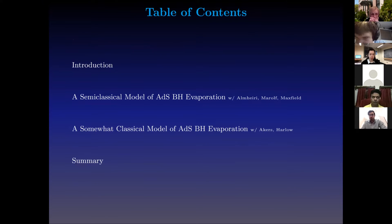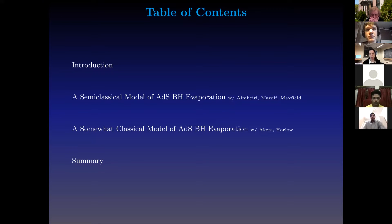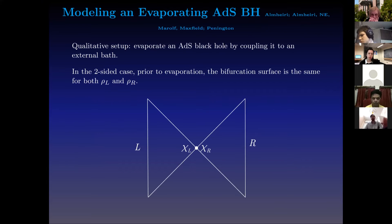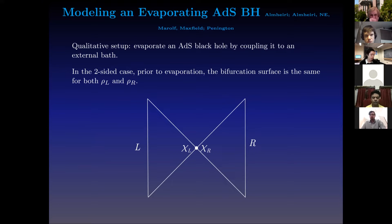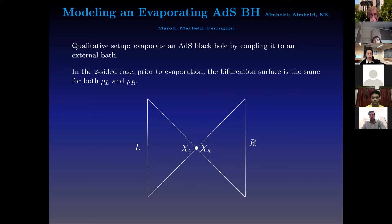I'm going to move on to the semi-classical model of ADS black hole evaporation. Because this has been discussed at almost ad infinitum at previous conferences, I'll be a little light on the technical details and talk more about the details of the second model later. The qualitative setup is that we want to evaporate an ADS black hole. There's a bit of a problem: we don't really know how to evaporate ADS black holes. Small ADS black holes do evaporate, but we don't really understand them, and large ADS black holes simply do not evaporate. The trick is that we are going to force it to evaporate by coupling it to an external bath.